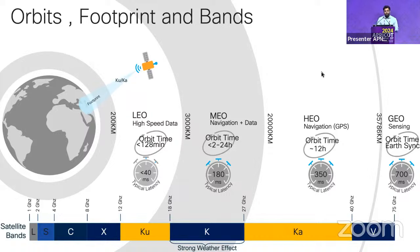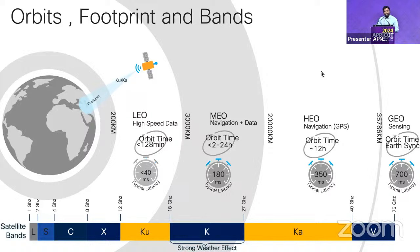MEO satellites cover navigation and data, with altitudes from around 2,000 up to 20,000 km. Above that we have high earth orbit for navigation, and then GEO satellites. Orbit times depend on altitude — for LEO satellites the orbit time is around two hours, plus or minus.